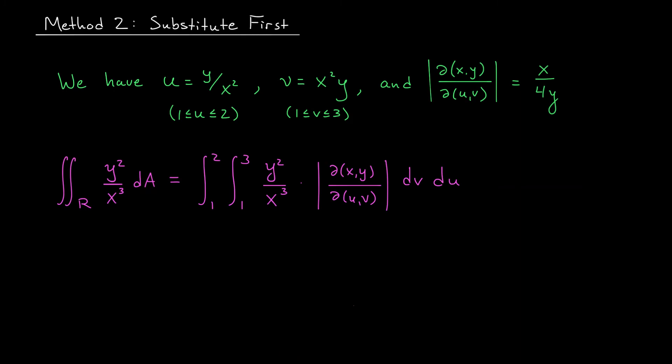We've just seen that inverting a transformation can sometimes involve a fair bit of work. But what other choice do we have? I mean, at the end of the day, we're going to have to write this integral in terms of just u and v. So we shouldn't have any x's or y's in our Jacobian or integrand.